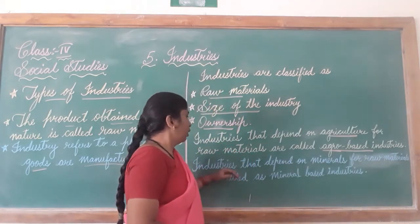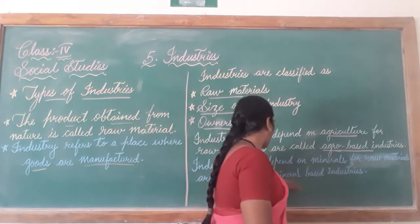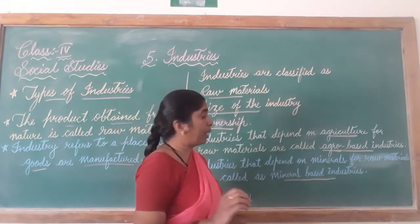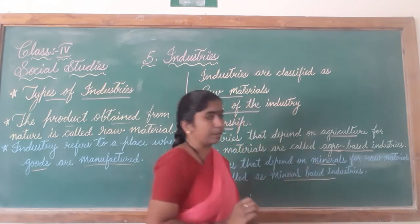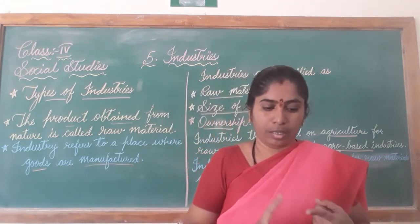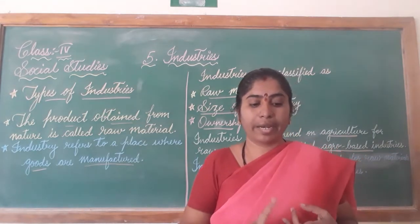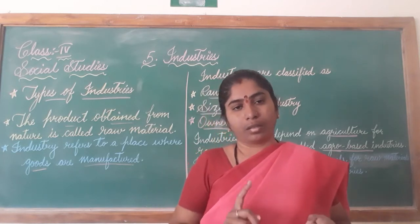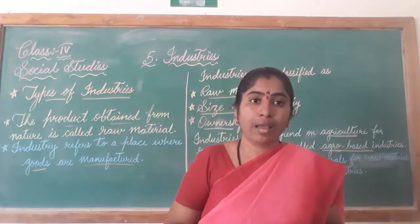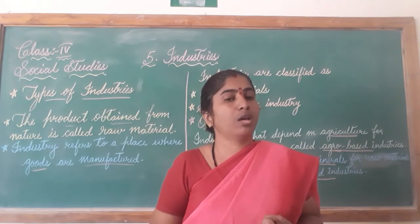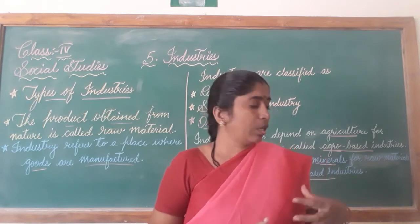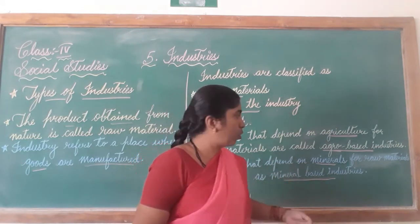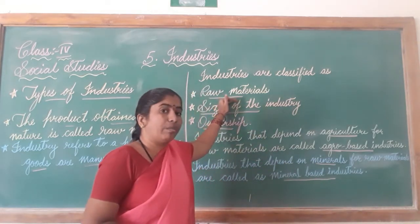Industries that depend on minerals for raw materials are called mineral-based industries. Examples include steel, iron, automobiles, cement, and drugs and chemical industries. For all these you need iron as a mineral. Copper is also a mineral, and some chemicals are also derived from minerals.